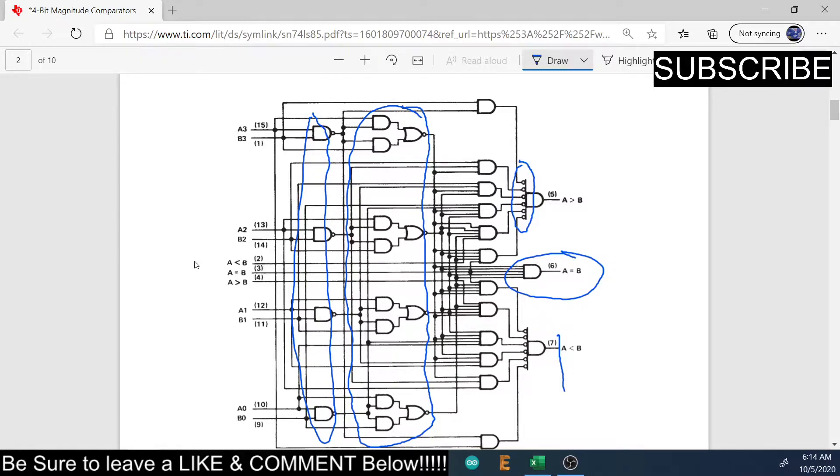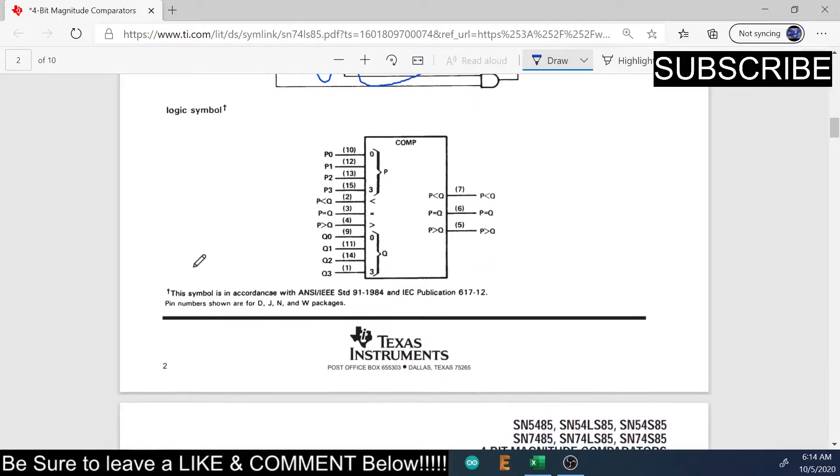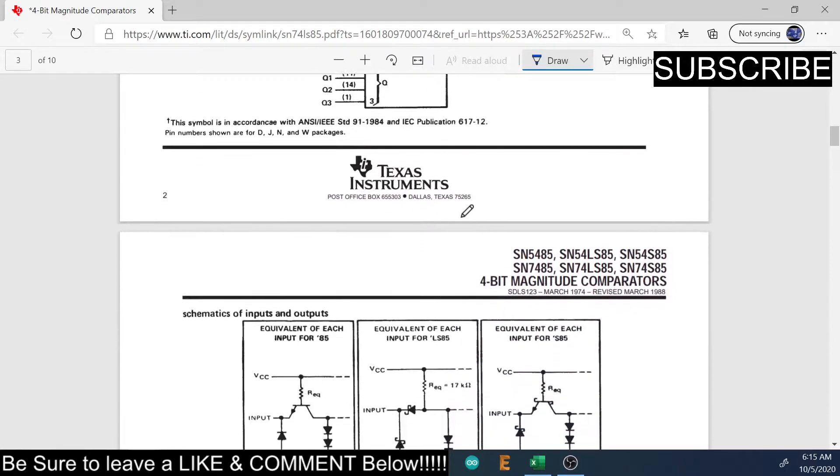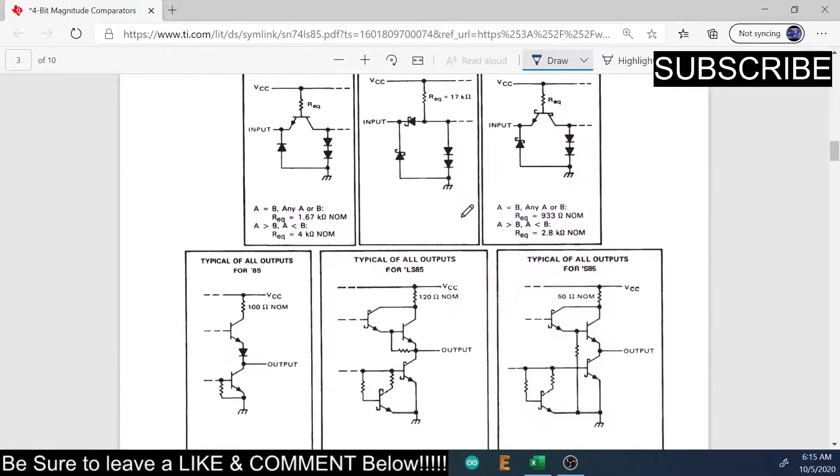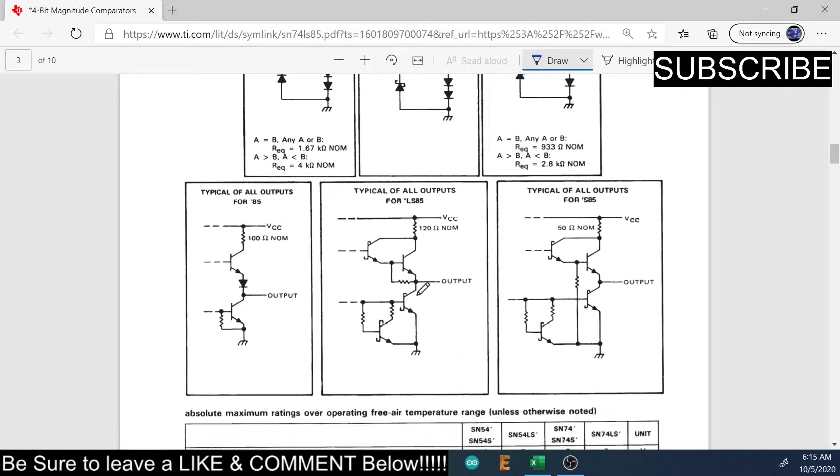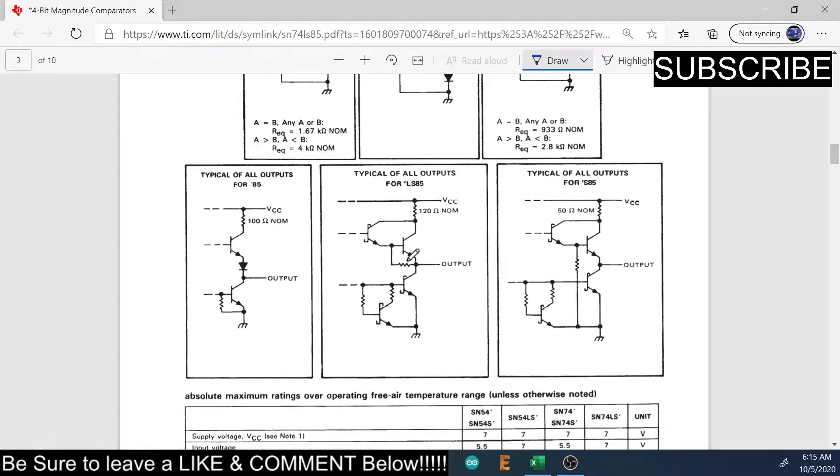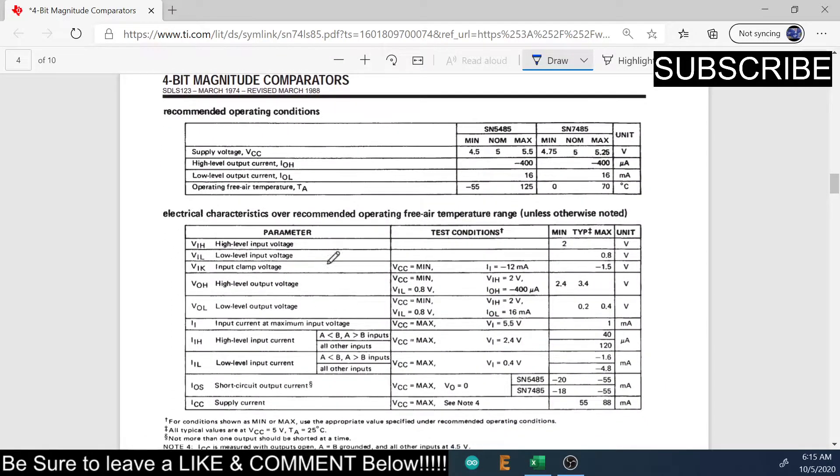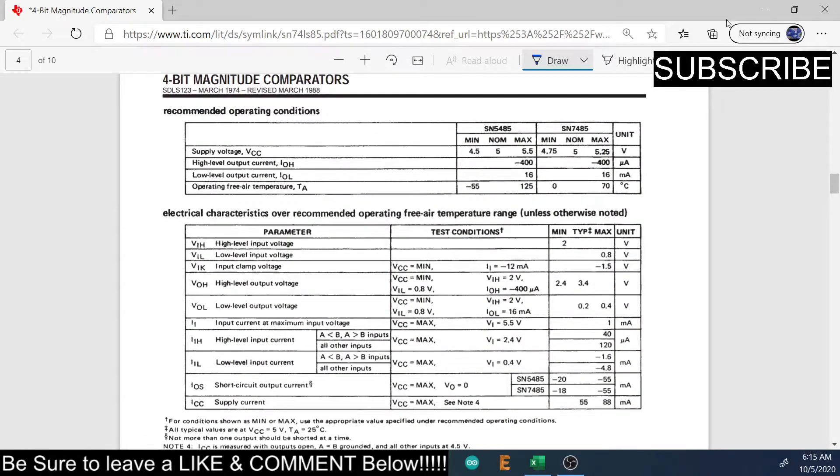So, let's go here. We got the logic diagram here. Inputs on one side, outputs on the other. It shows you the LS series right here. We got a resistor on the output. So we won't need any LEDs. And then we have some specs for it, but the TTL specs are about the same.